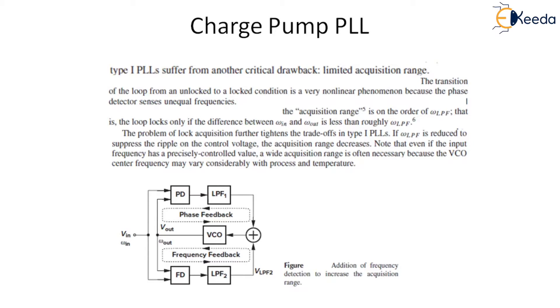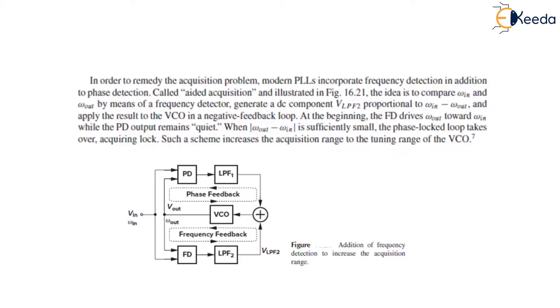And in order to remedy the acquisition problem, we can use the modern PLL, which incorporates frequency detection in addition to phase detector. It is also called aided acquisition and it is shown over here that one loop is used for phase feedback and another is used for frequency feedback. The idea is to compare W in and W out by means of a frequency detector in addition to phase detector.